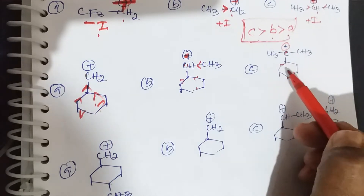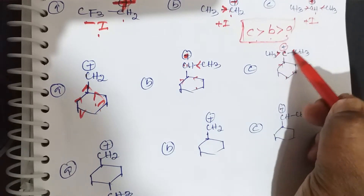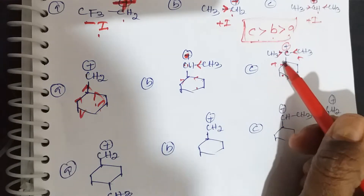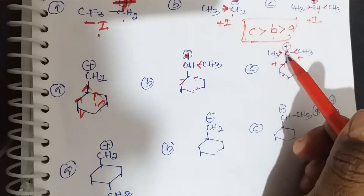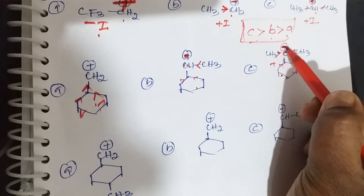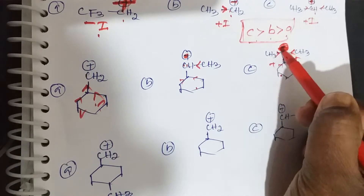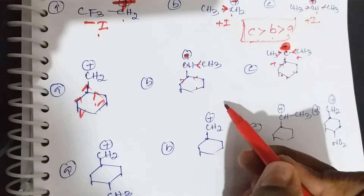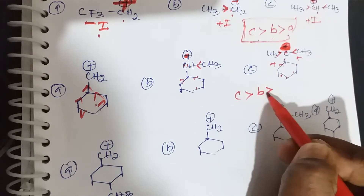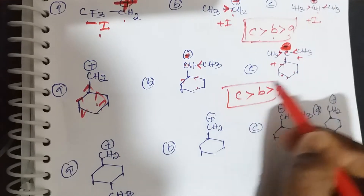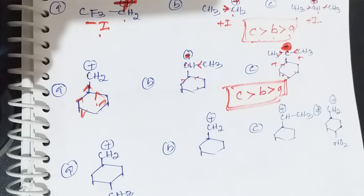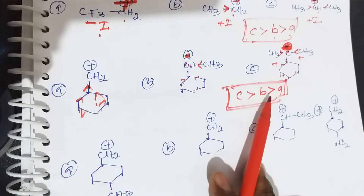The third one is a tertiary carbocation. Two methyl groups are plus I and the cyclohexane group is also plus I — three electron releasing groups in total. So positive charge is completely decreased. Stability order: C > B > A. C is more stable than B, and B is more stable than A.